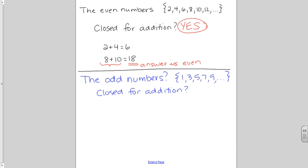How about the odd numbers? 1, 3, 5, 7, 9. Are the odd numbers closed for addition? Well, let's think of a couple numbers. 1 plus 3, the answer is 4.